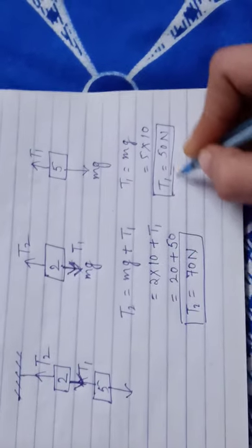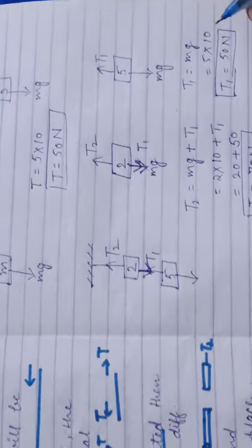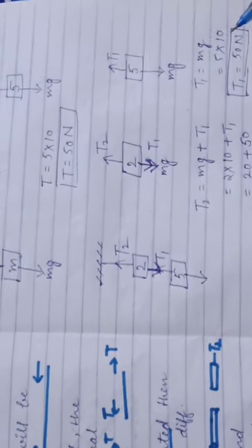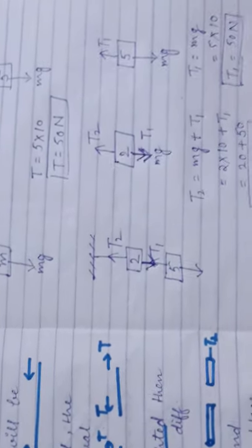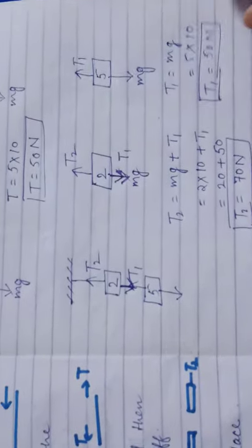So like this you find both the values T1 and T2. I hope you all understand this topic, and if you have any doubt, ask me. I will tell you in our next video. Thank you.